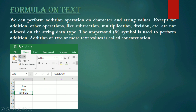Next we are going to learn about formulas applied on text — how to apply a formula on text values. Before, we applied formulas on numerical values. We can represent text values in two ways: the first is a character value and the second is a string value. A character value means there is only one letter. A string value means a word. For example, A or D is a character value, and the combination AD together is an example of a string value.